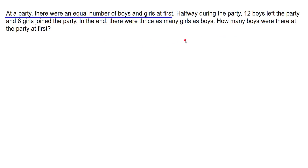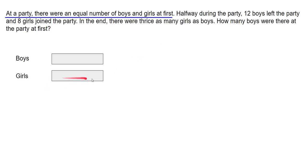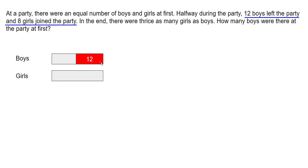We are asked to find the number of boys at the party at first. Taking the first piece of information — at the party there were an equal number of boys and girls — let's draw a model for boys. This rectangle represents the total number of boys at the beginning. For girls, since there were an equal number, girls will also have the same sized model diagram. Then, halfway during the party, 12 boys left.